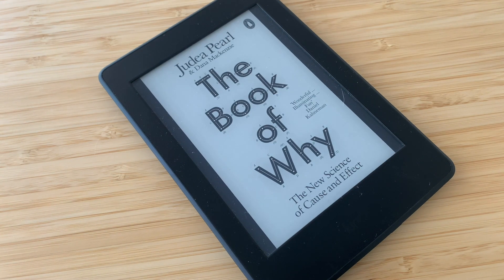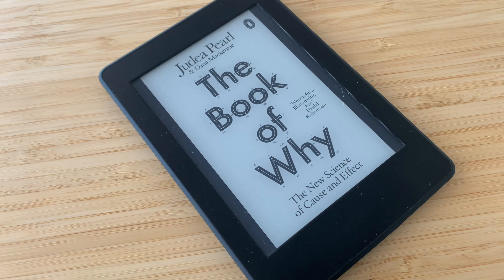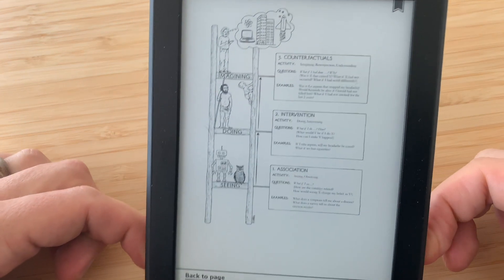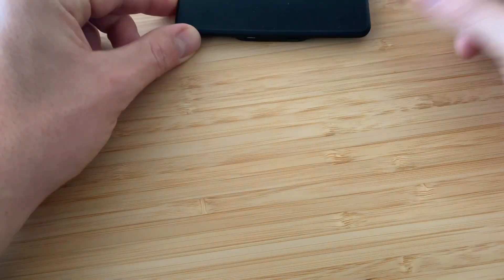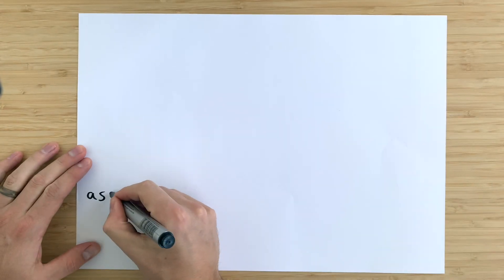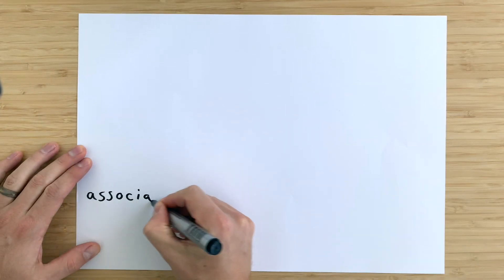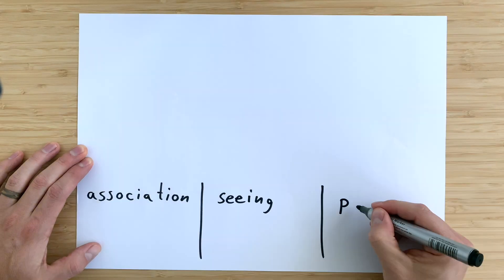There's this book called The Book of Why. It describes the hierarchy of causal relationships. There are three levels of it. The lowest one is association. It is about what we see and what conclusions we can draw from that.